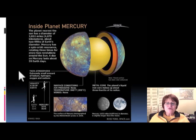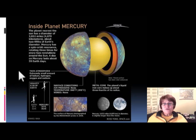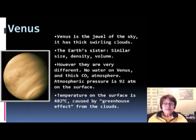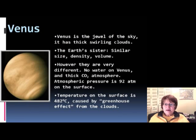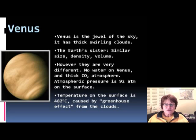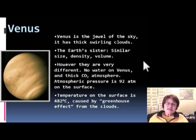There are some interesting facts about Mercury on the next slide — I copied it from NASA. I have a similar slide for each planet. You don't have to know all the details, but it's interesting to read through. The second planet is Venus, also called the jewel of the sky because it has thick, swirling clouds that look beautiful from satellites.